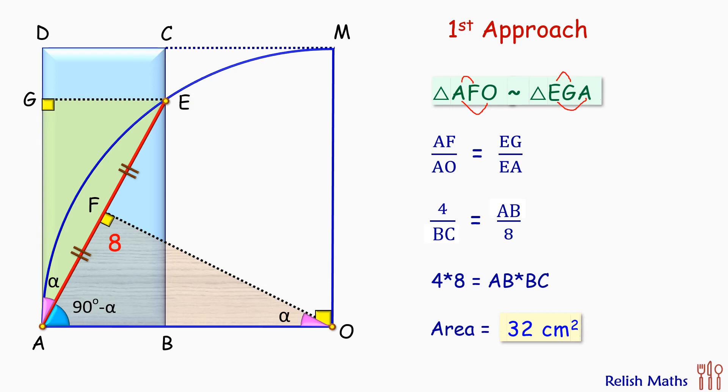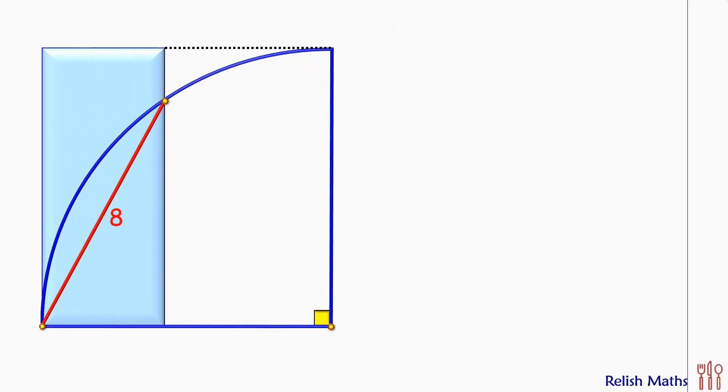Now let's check the second approach. In this logical approach, we'll exploit the fact that area of rectangle is dependent only on the length of this chord, which is 8 centimeters.